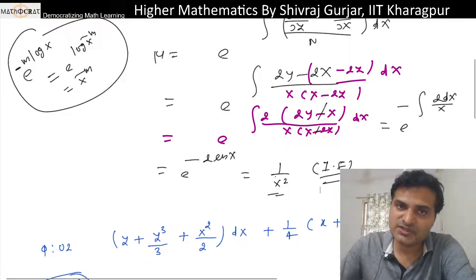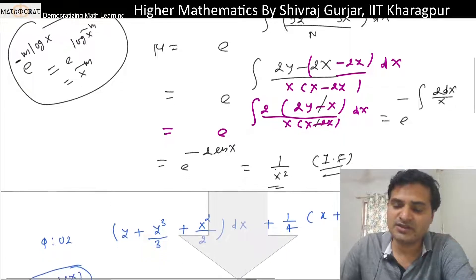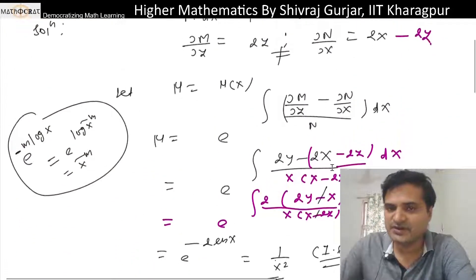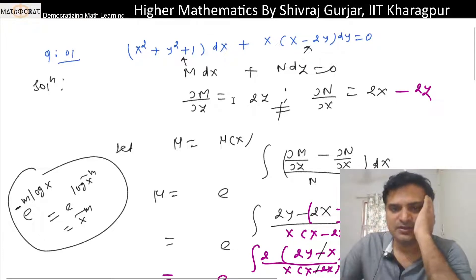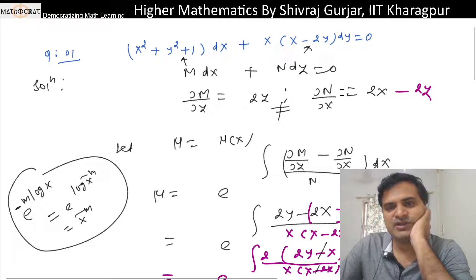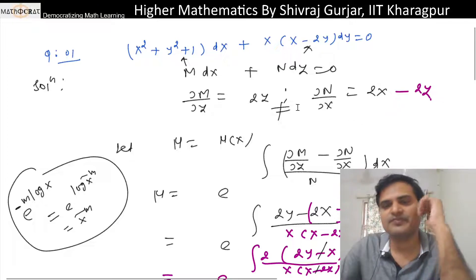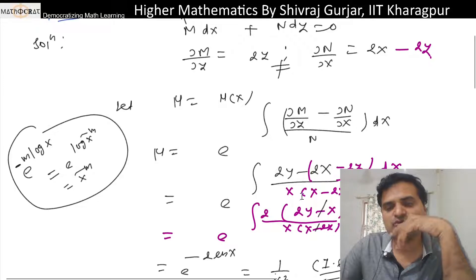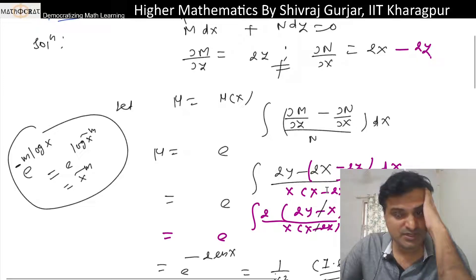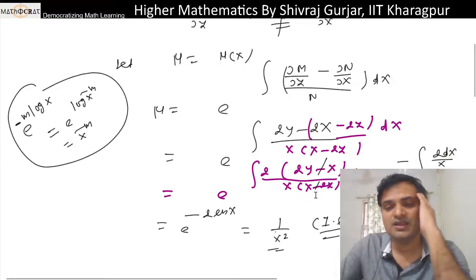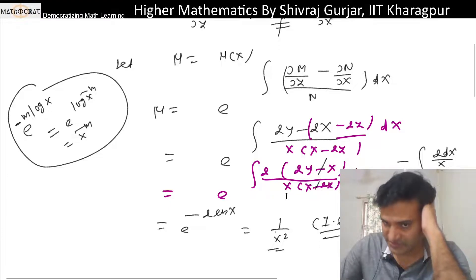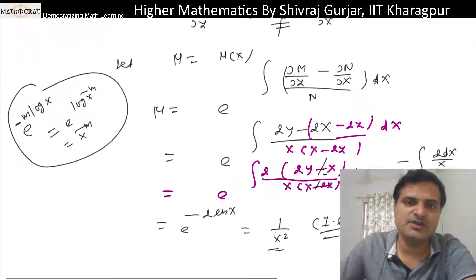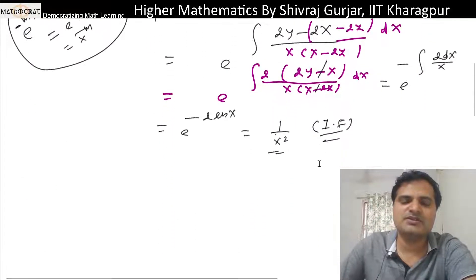So first find the integrating factor, then solve the differential equation. The integrating factor is 1/x squared. Del(M)/del(y) is 2y, del(N)/del(x) is 2x minus 2y, and 2y minus (2x minus 2y) gives 4y minus 2x. Taking 2 common gives 2y minus x, which cancels with the denominator term, giving e to the power minus 2 ln(x), so 1/x squared. Yes, that is confirmed.